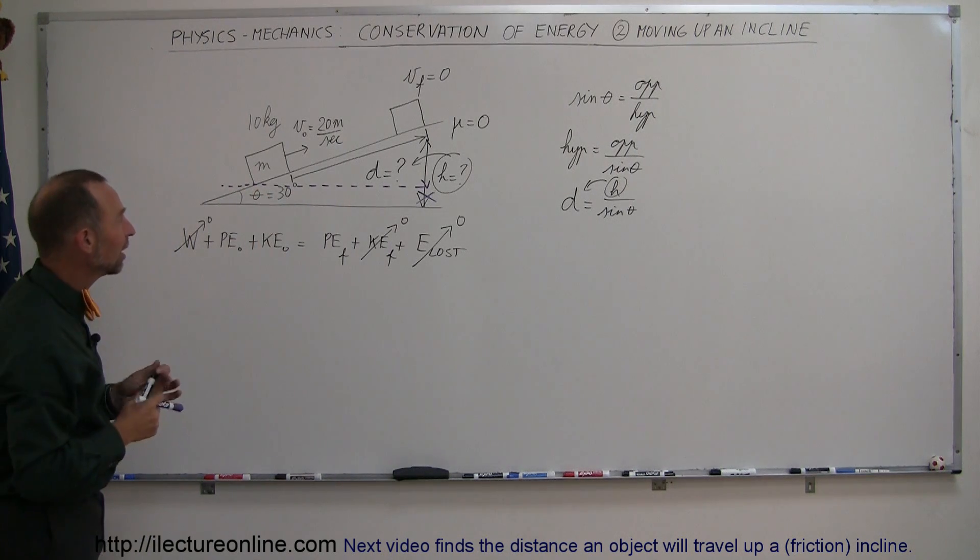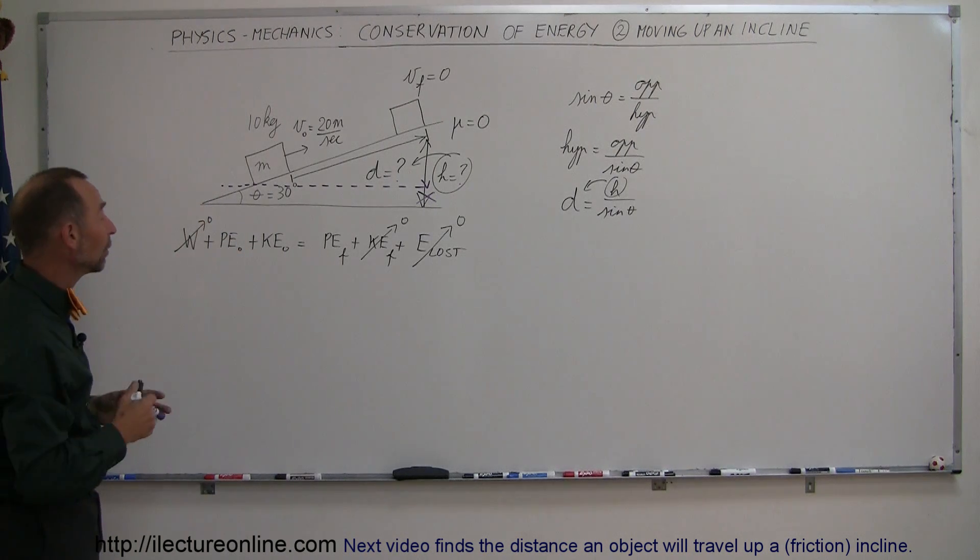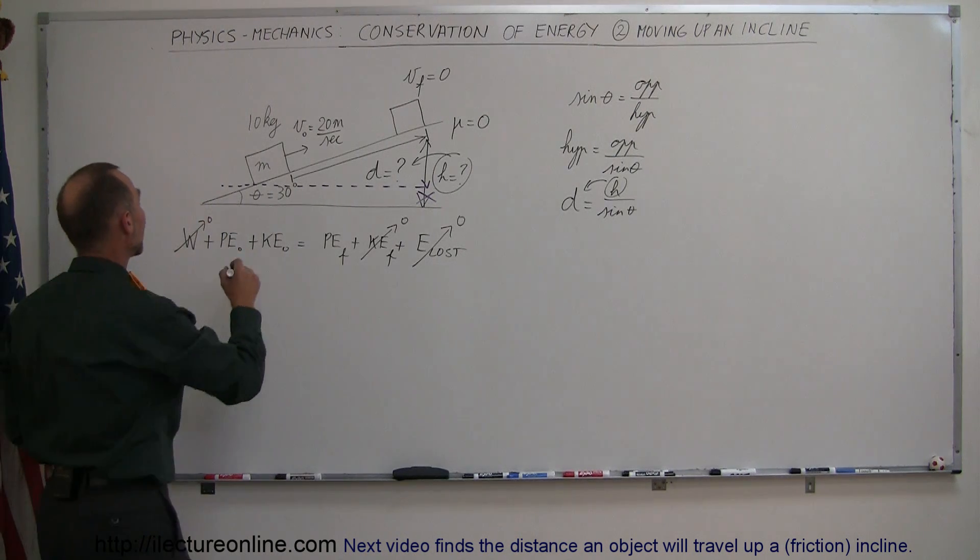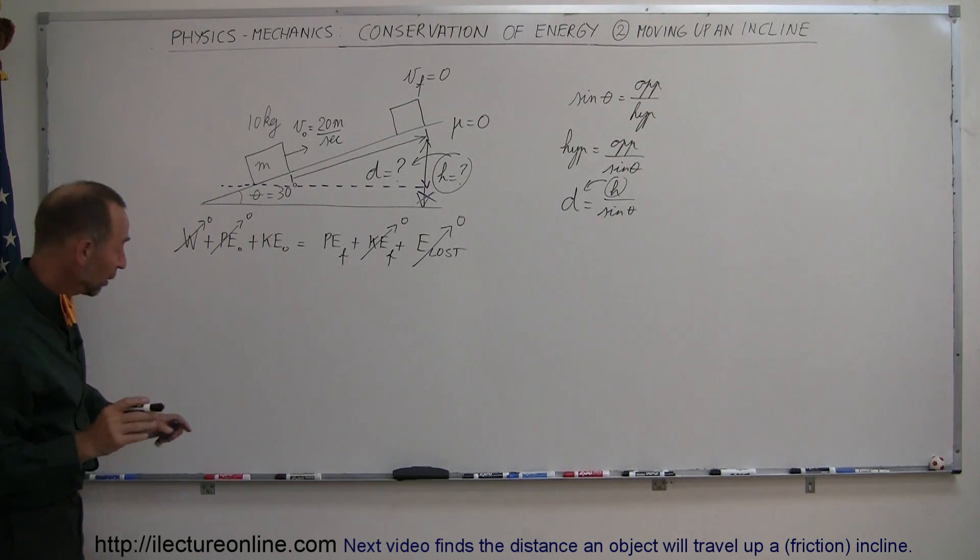So we can arbitrarily put the zero height at any place that we want to make it convenient for the problem, so therefore in this case we can say that we have no initial potential energy.